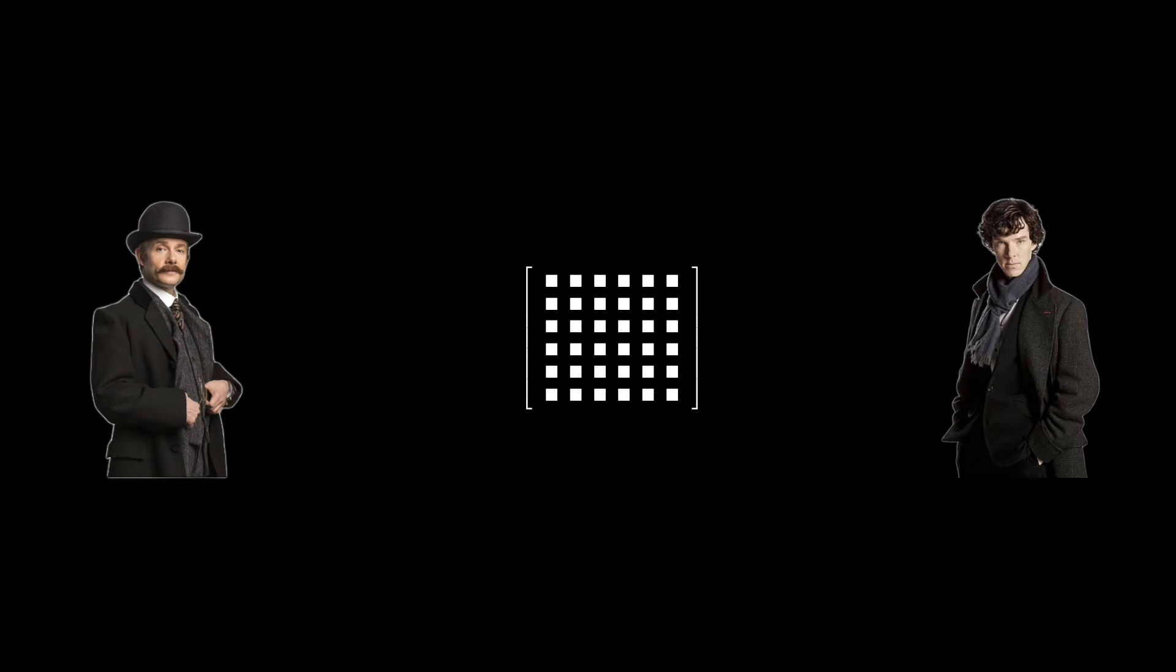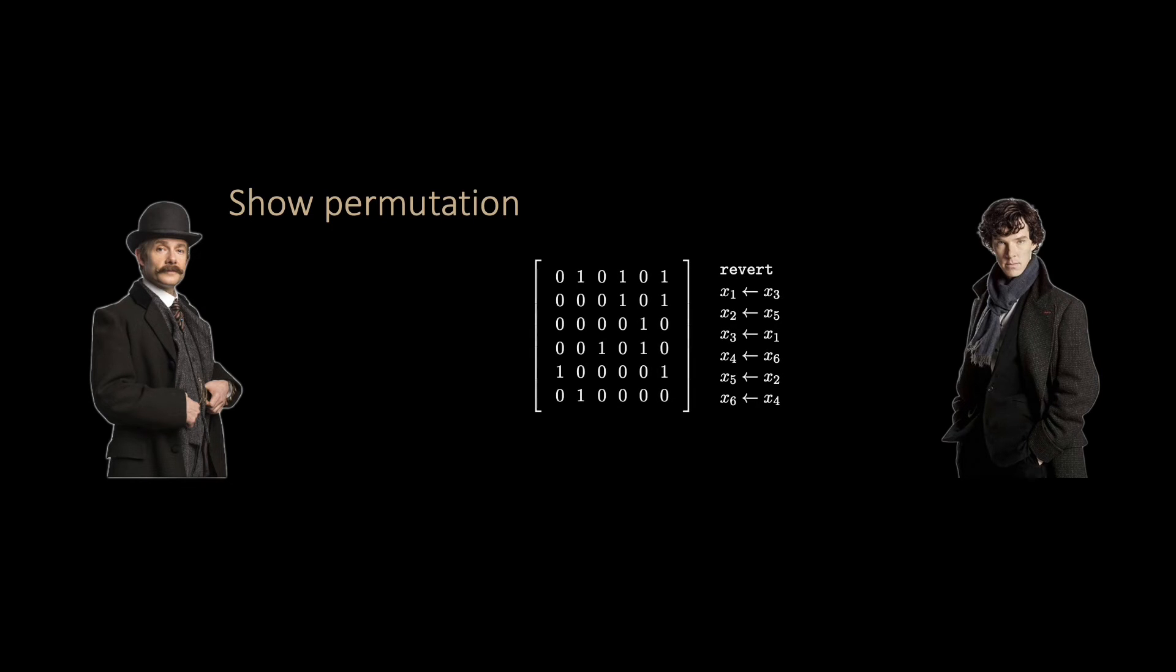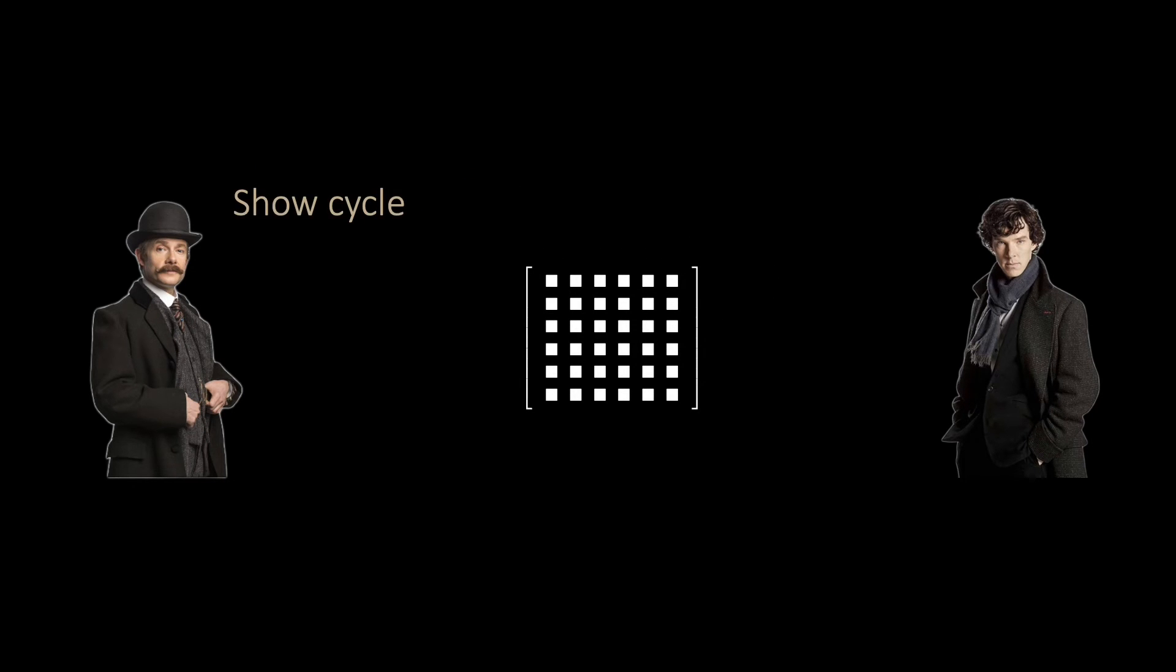Watson now has two choices. He can request Sherlock to open the matrix and show the permutation. Sherlock can do this by opening every matrix entry and showing how he changed the names. Watson's second option is to ask for the cycle. In this case, Sherlock only shows the entries that make up a cycle. They repeat the protocol many times, and in each repetition, Watson can either ask for the permutation or for the cycle, but never for both.